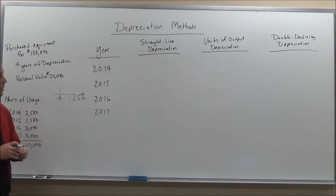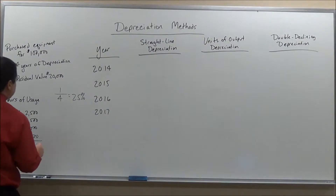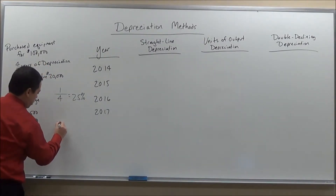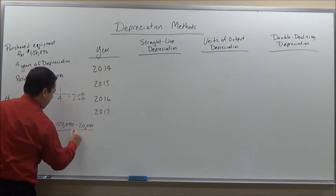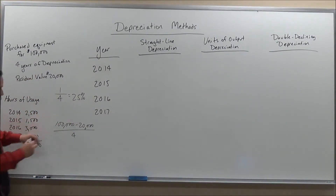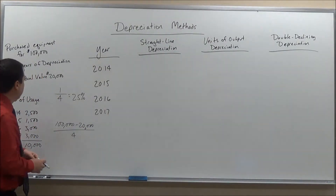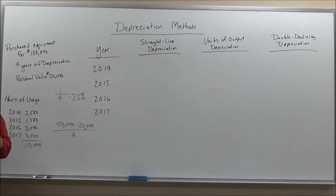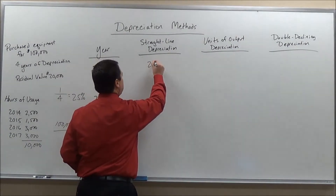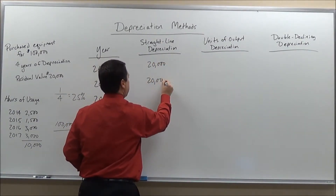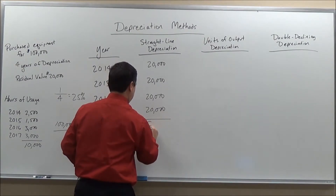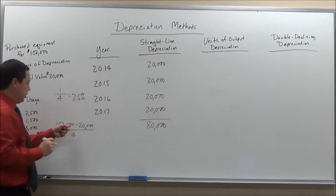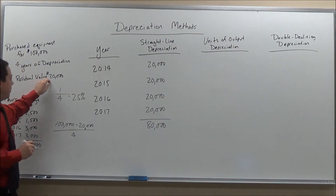With that, I can figure out how much depreciation we have. We take the $100,000 minus the residual value of $20,000, which gives us $80,000, and divide that by 4 years — or multiply by 25%. That gives us $20,000 per year. So the depreciation for each of these years is $20,000, for a total depreciation of $80,000, which equals the equipment cost minus the residual value.